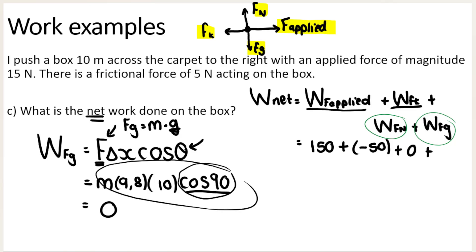And in the same way, the work done by the normal force is zero. Why is the work done by the normal force zero? Because again, the box is moving to the right, but the normal force acts straight up, FN. The angle between them is 90. So therefore, my net work is 150 minus 50, which is 100 joules.